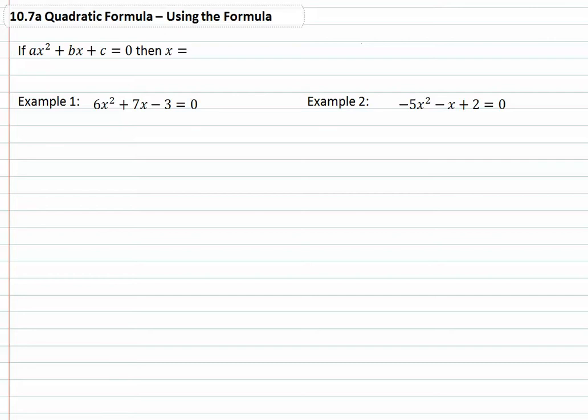This is lesson 10.7a on the quadratic formula, using the formula. If we have a quadratic of the form ax² + bx + c = 0, then x will equal the following formula.